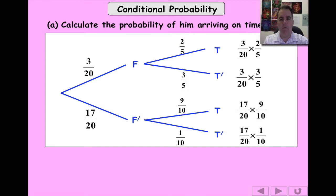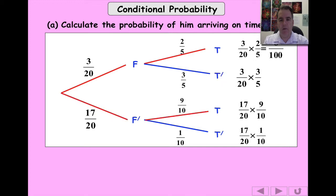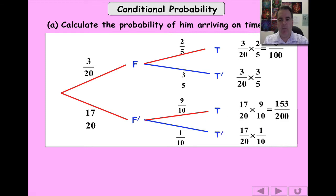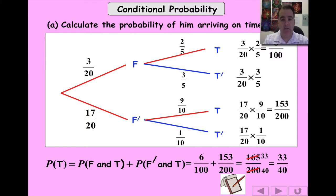What's the probability of him arriving on time? There are two branches showing him on time: fog and on time gives 6 out of 100, and no fog and on time gives 153 out of 200. Adding these two probabilities together gives 165 over 200, which simplifies to 33 over 40 as a fraction, and you can express that as a decimal as well.